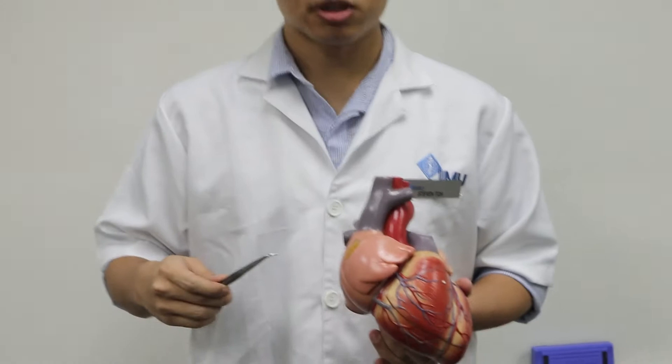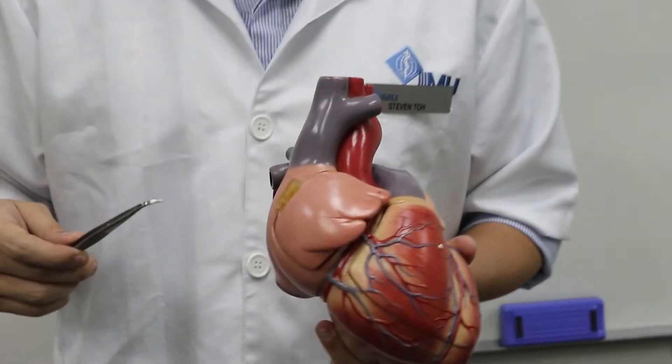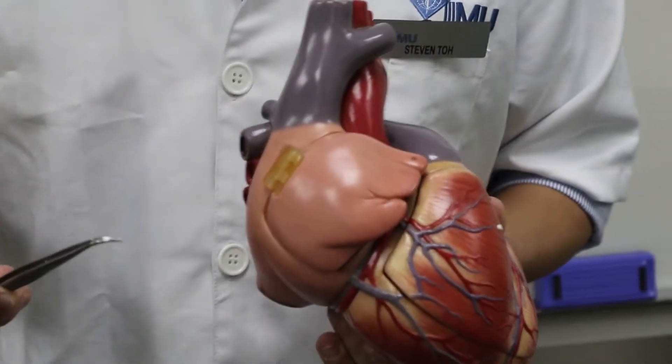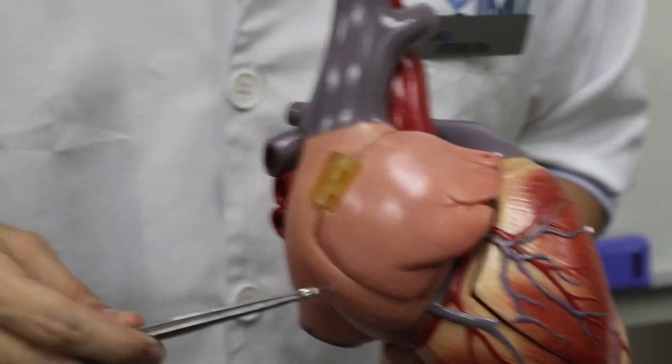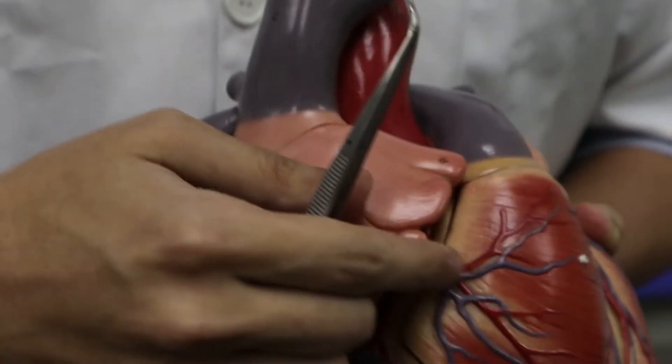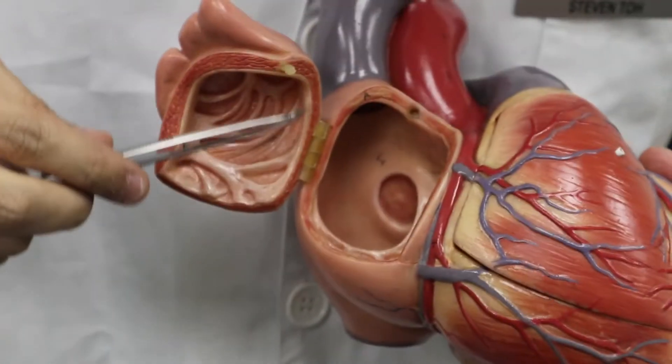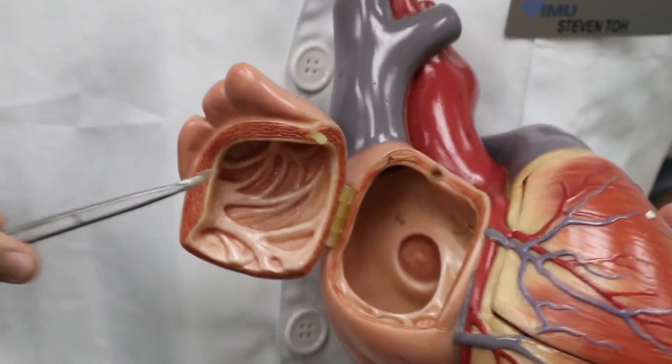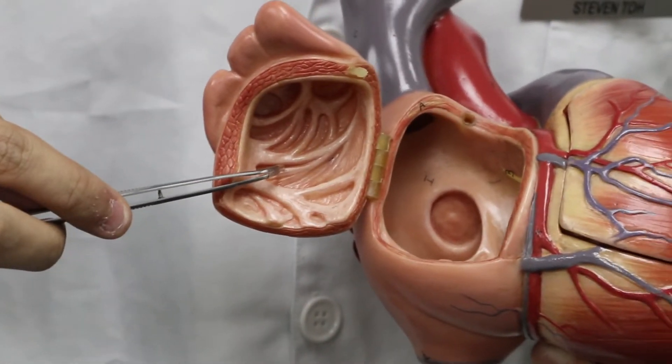The features of the right atrium can be divided into the rough part and the smooth part. The rough part includes the sulcus terminalis on the outside and crista terminalis on the inside. There is also the musculi pectinati on the inside.